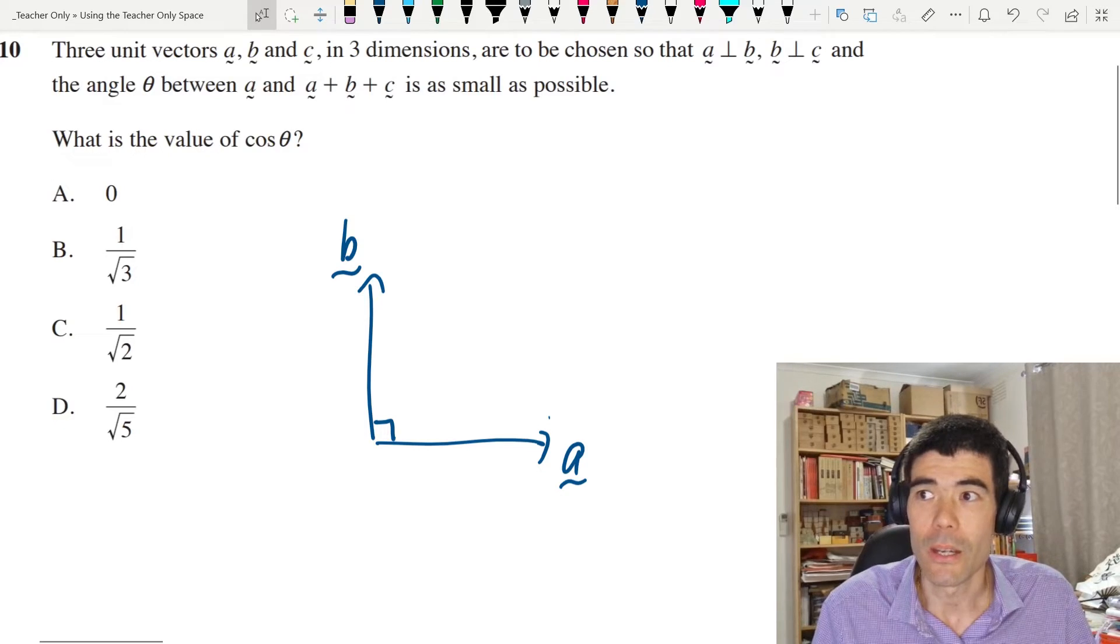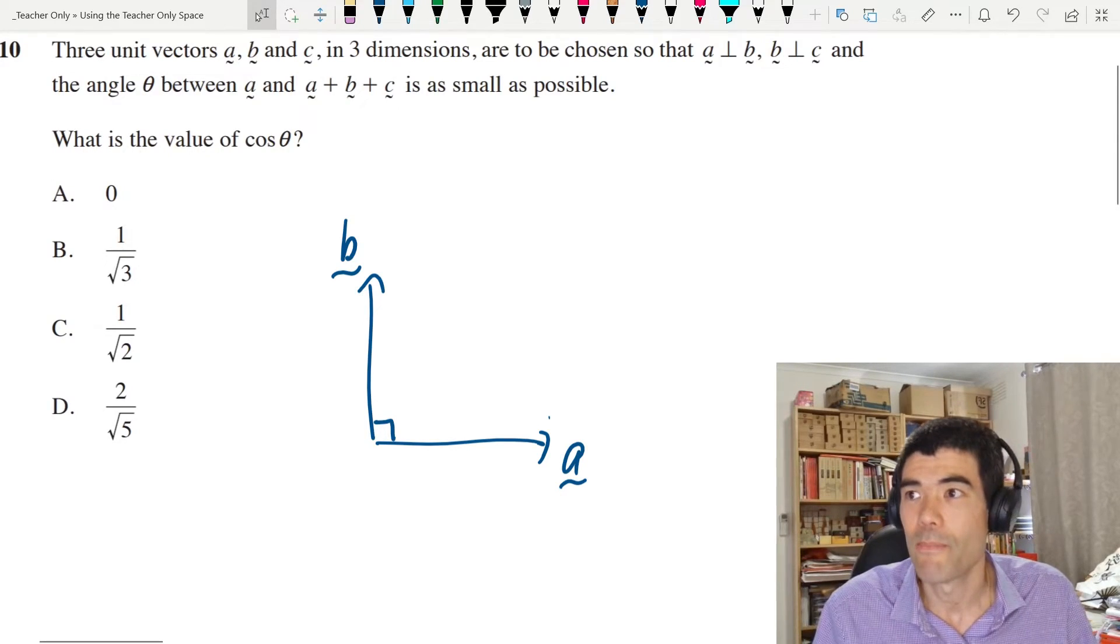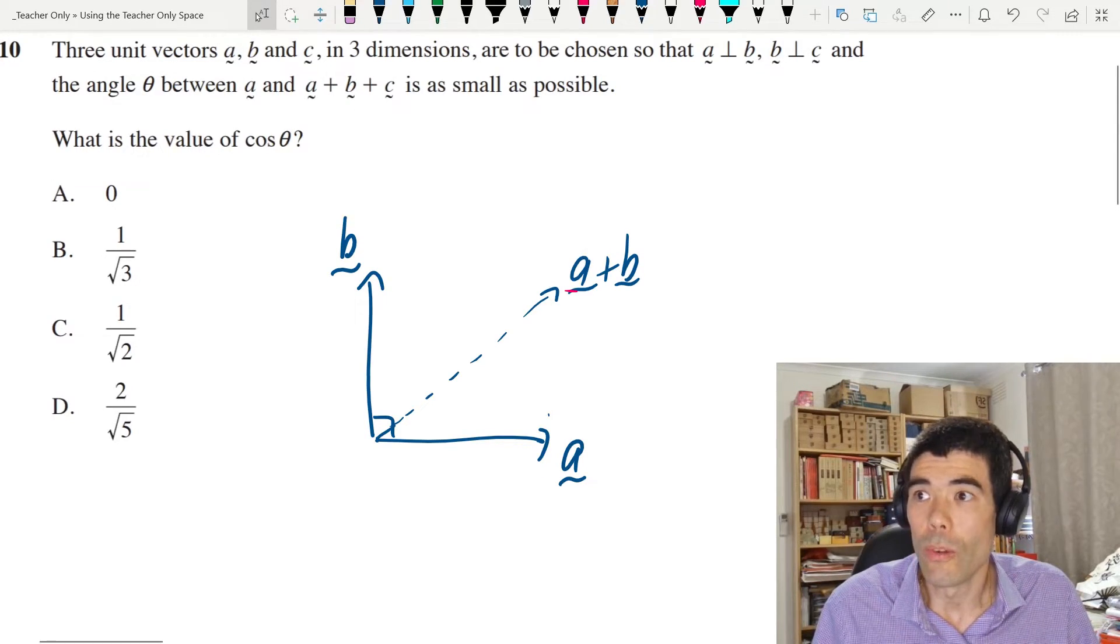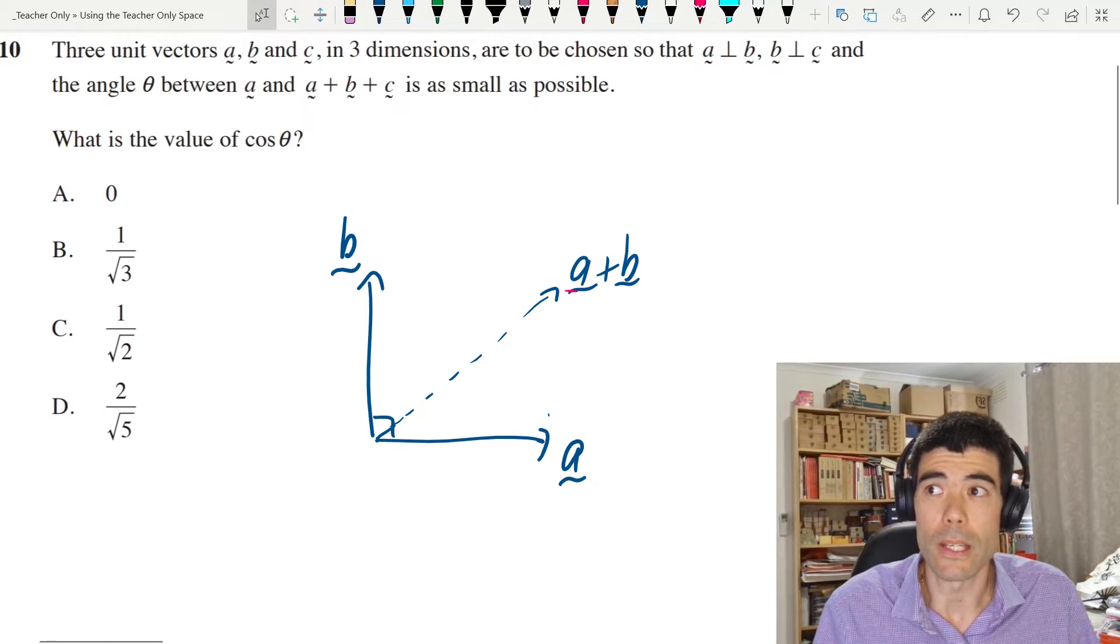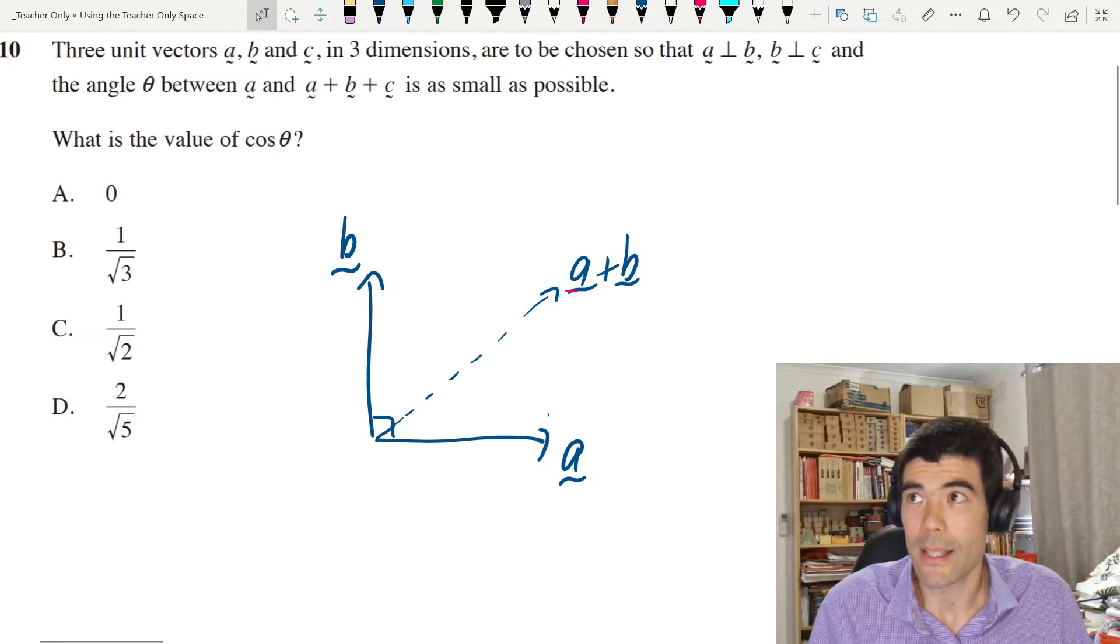We place unit vectors a and b perpendicular to each other like this. We can know already a plus b is going to be this diagonal vector here. And now what do we know about c?